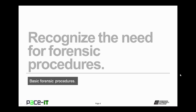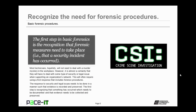I'm going to begin by discussing how to recognize the need for forensic procedures. The first step in basic forensics is the recognition that forensic measures need to be taken, as in that a security incident has occurred. Most technicians will not need to deal with a murder mystery in the workplace. However, it is almost a certainty that they will have to deal with some type of security or legal issue, especially when supporting an organization's network. This will often require using a first response that includes forensic procedures. The response to security and legal issues needs to be done in a manner such that evidence is recorded and preserved. The first step is recognizing that something has occurred which needs to be documented and that evidence needs to be collected and preserved.